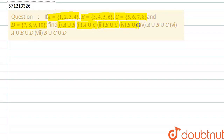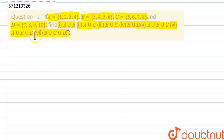The 4th is B union D, 5th is A union B union C, 6th is A union B union D, and 7th is B union C union D. So these are the 7 parts we have to find. First, we write down what is given.